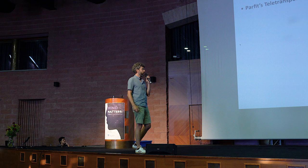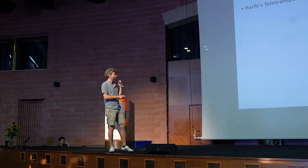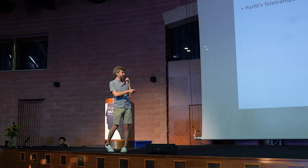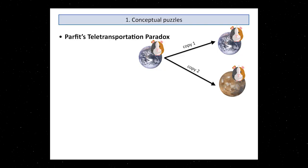Now what Parfit looked at was the case where the transporter is broken. So suppose something you don't really want to happen actually happens. You have your copy on Mars, so you travel to Mars in the way you would, but there's another copy remaining on Earth somehow.